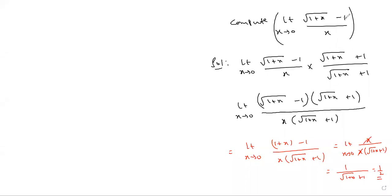Very simple question. To find this limit, apply the rationalizing method: for √(1+x) - 1, multiply and divide by the conjugate √(1+x) + 1. This gives us a difference of squares form (a²-b²), so the numerator becomes (1+x) - 1 = x. The x in the numerator and x in the denominator cancel out.